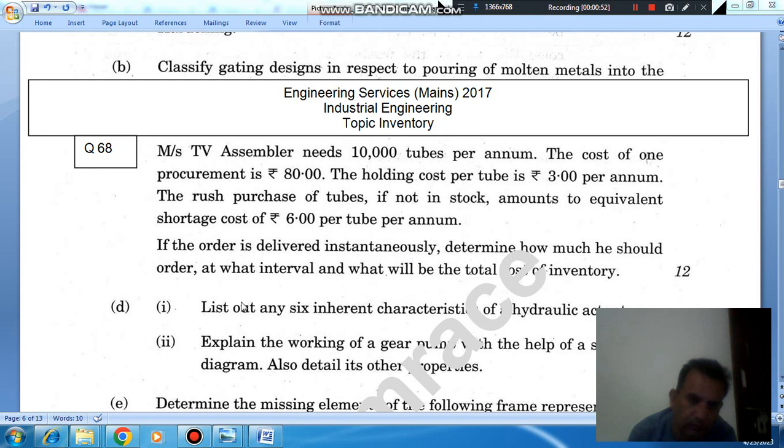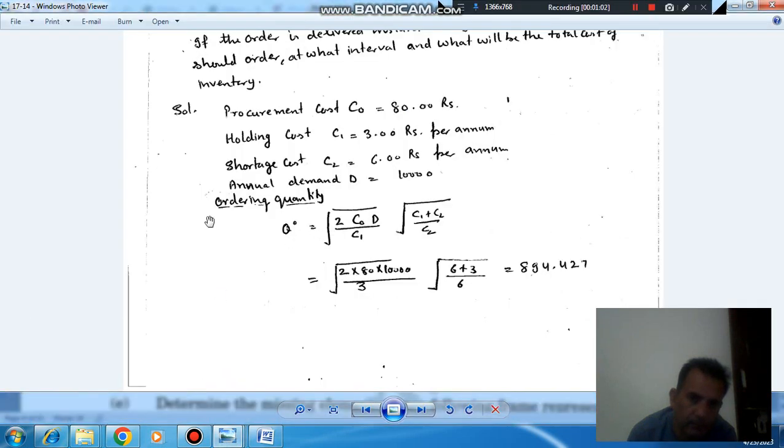So, here the procurement cost C-not is given as Rs. 80, holding cost is given as Rs. 3 per annum, and shortage cost is given as Rs. 6 per annum, and demand is Rs. 10,000.